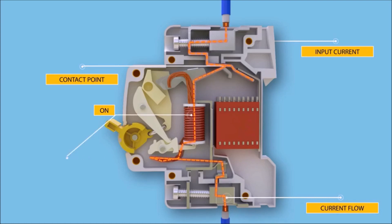The current path goes through: first the incoming terminal, then the contact point of moving and fixed contacts, then the magnetic coil, then the bimetallic strip, then the outgoing terminal. All are arranged in series.